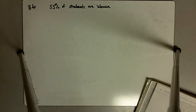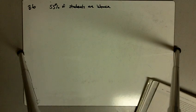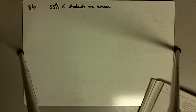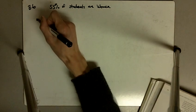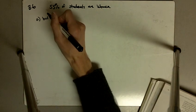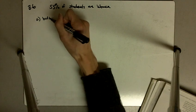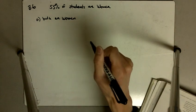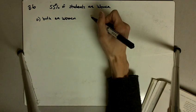Exercise 3.6 reads, in a certain college, 55% of the students are women. Suppose we take a sample of two students. Use a probability tree to find the probability that A, both are women, and B, at least one of the two is a woman.